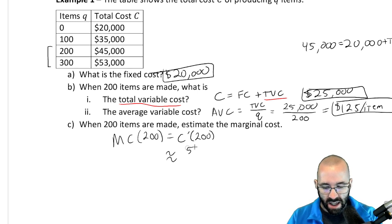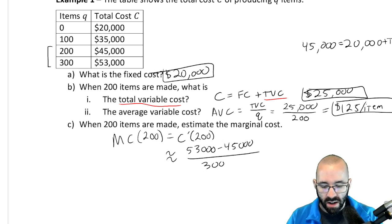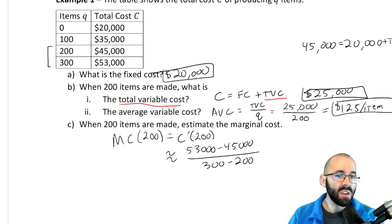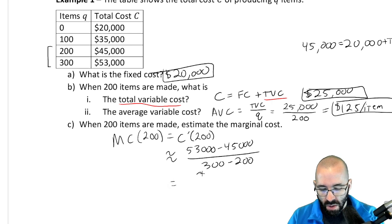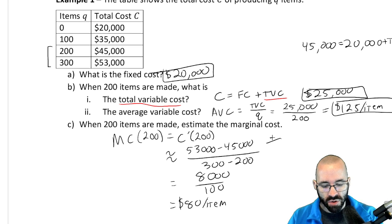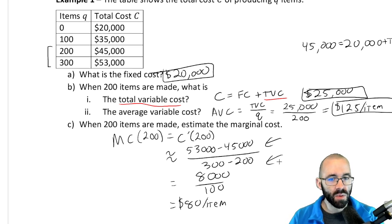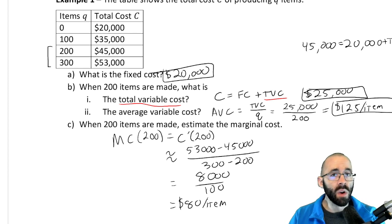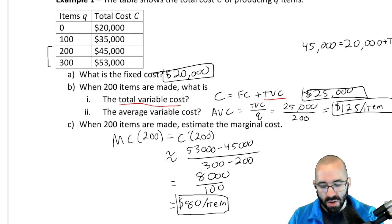We approximate the marginal cost with the slope of the secant line between two points: that's rise over run — second cost minus first cost, over second quantity minus first quantity. We want the cost of the next item; we don't know the cost of 201 items, but we know the cost of the next 100 items, so we can use that to approximate. We get $8,000 over 100, so the marginal cost is approximately $80 per item. Dollars on top, items on bottom — units are dollars per item.